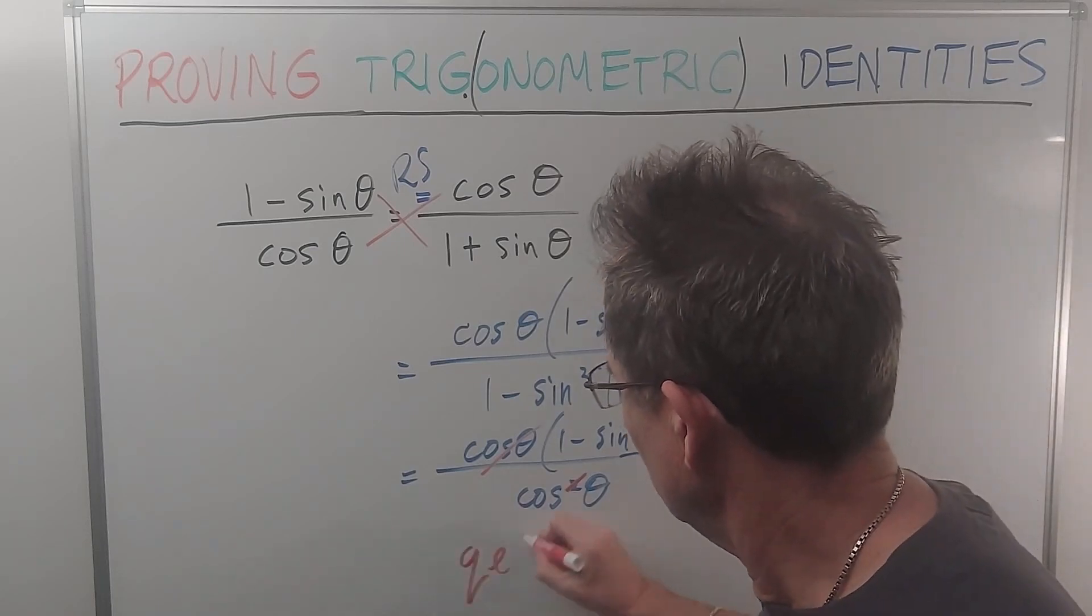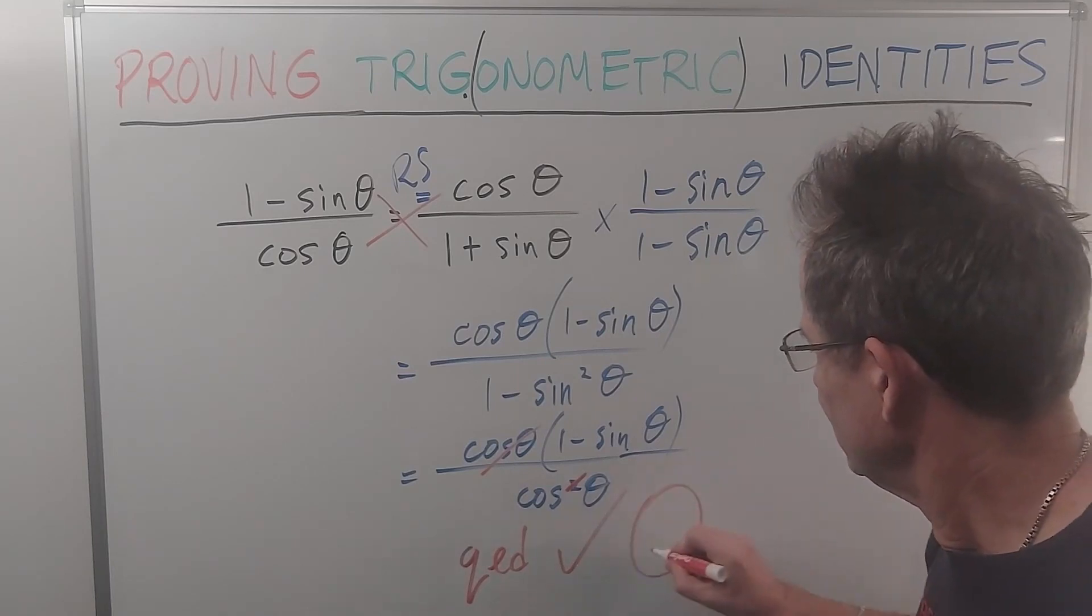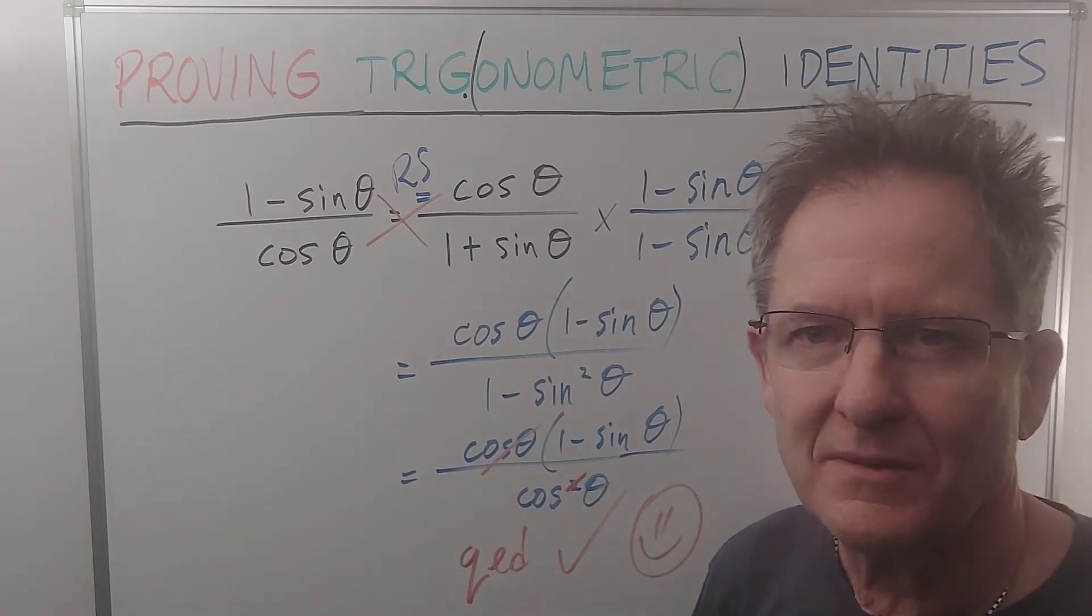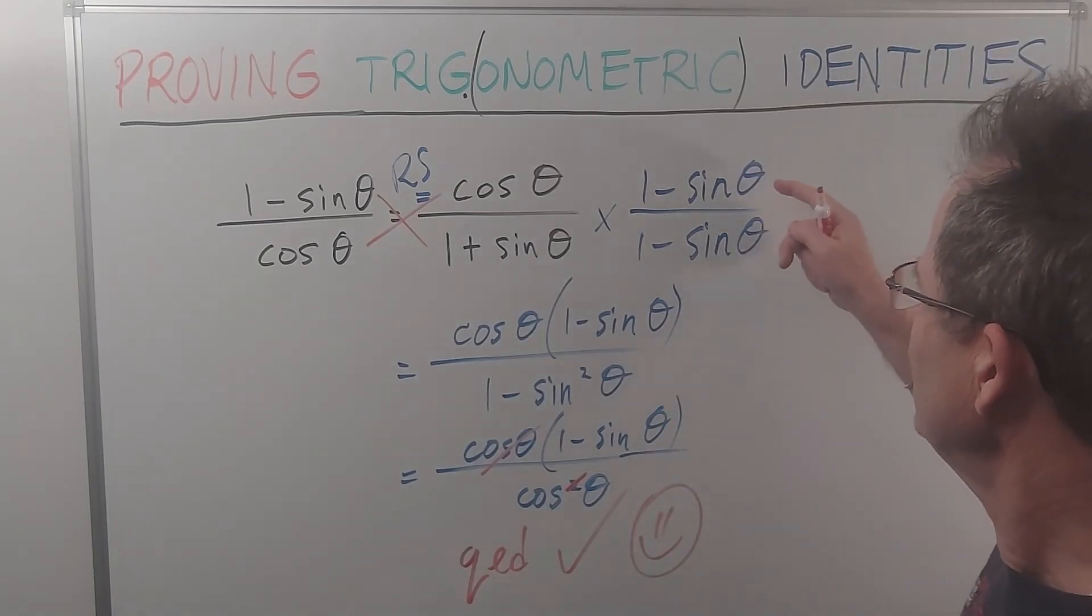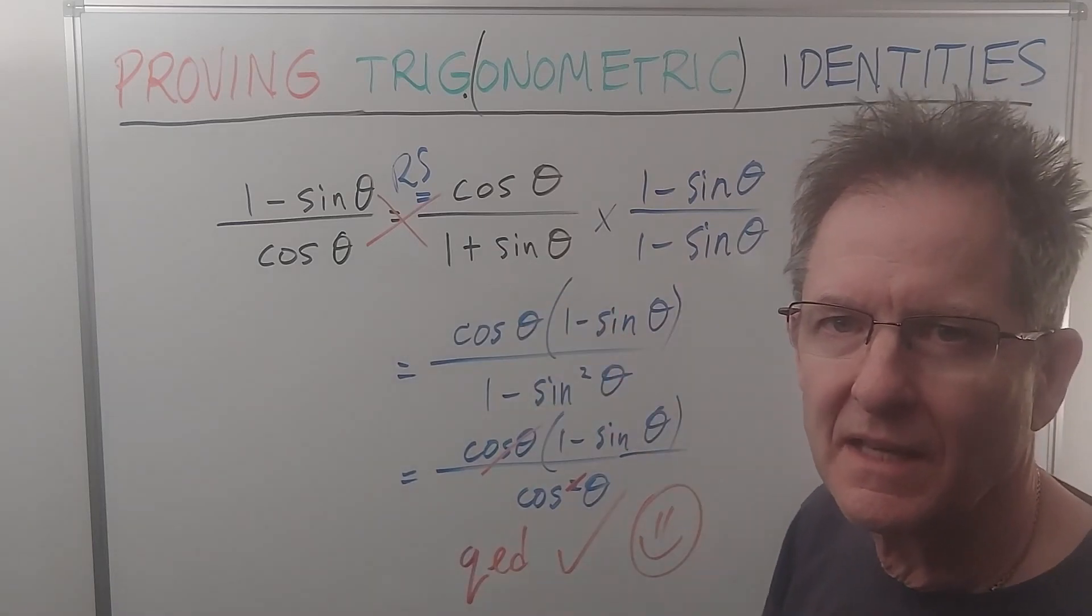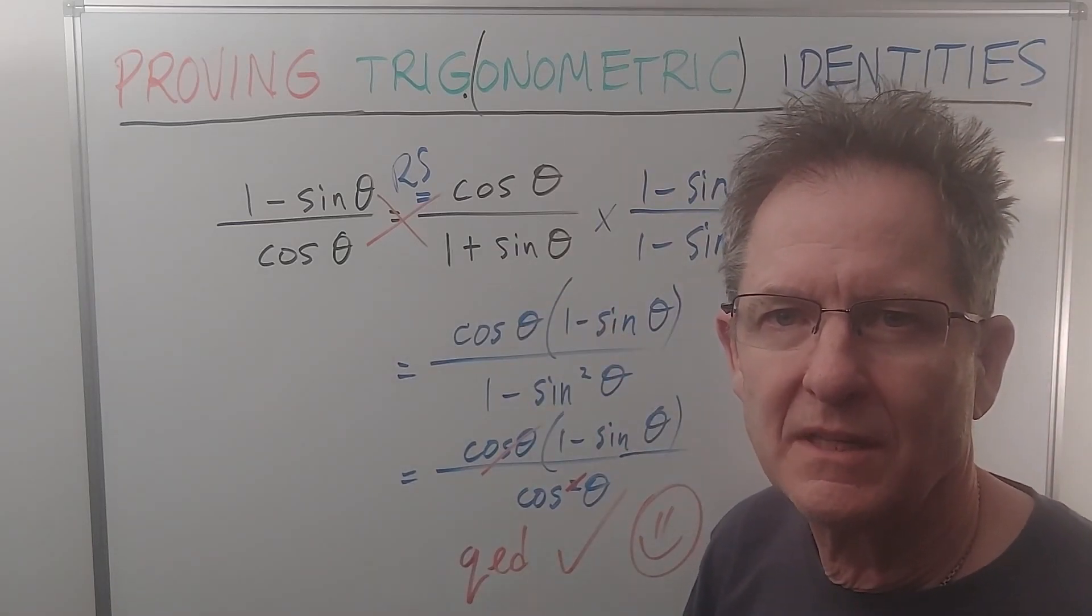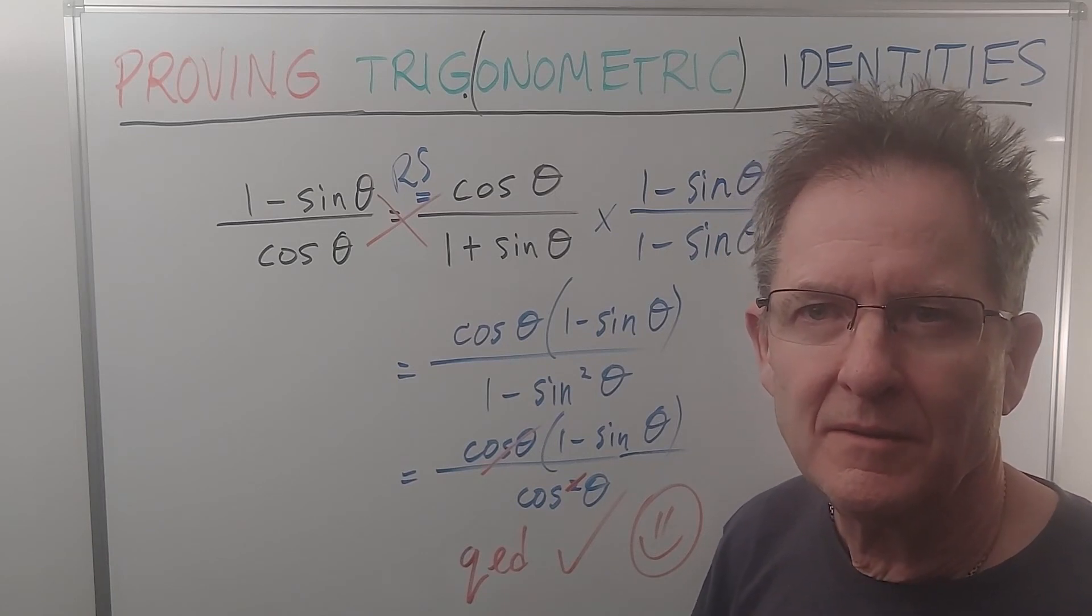So QED, big fat check mark or better yet, smiley face. So multiplying one side, top and bottom, by the conjugate of the denominator is a handy little trick, which can help you solve or prove, I should say, identities.